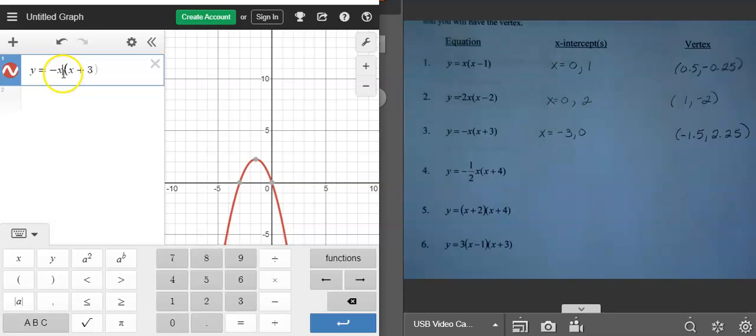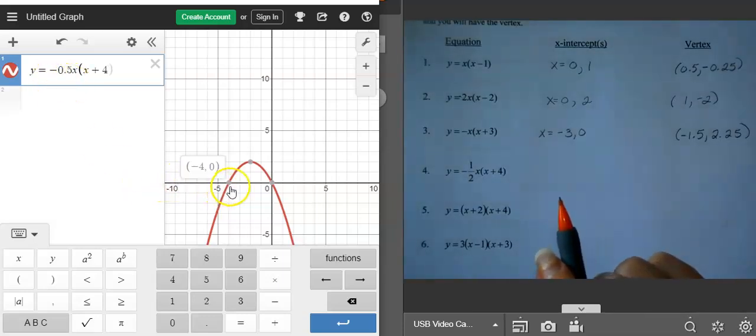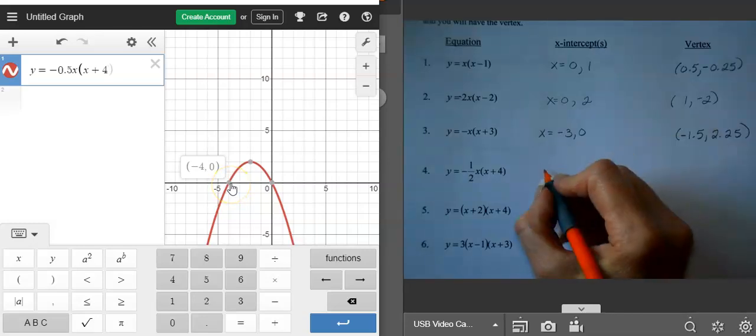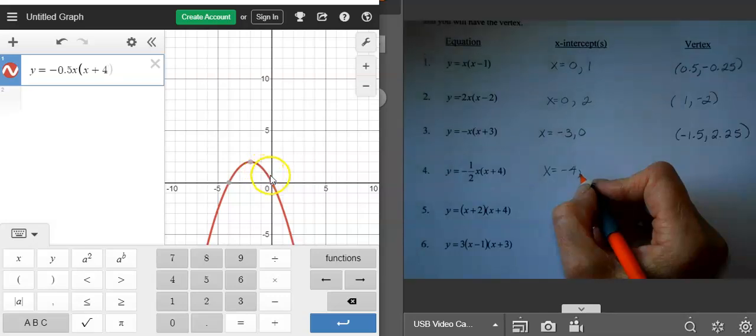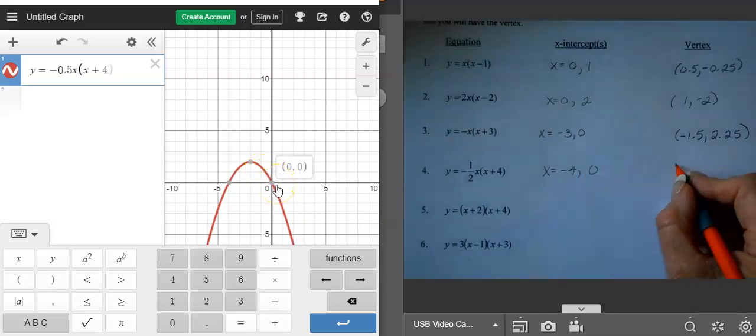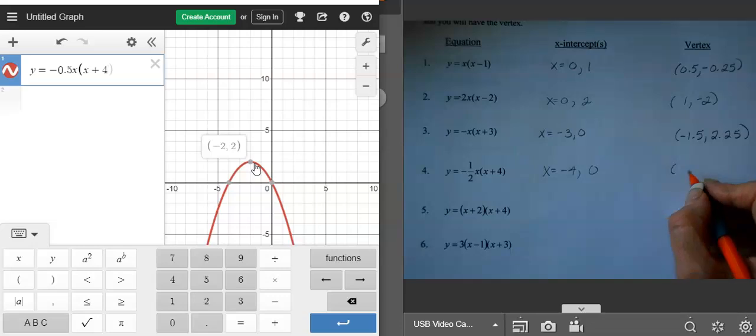On the next one, I have negative 0.5, x, and then x plus 4. And so here's the graph for that. Let's scroll over here. Our x-intercepts are negative 4, and my other x-intercept is 0. My vertex is negative 2, 2.